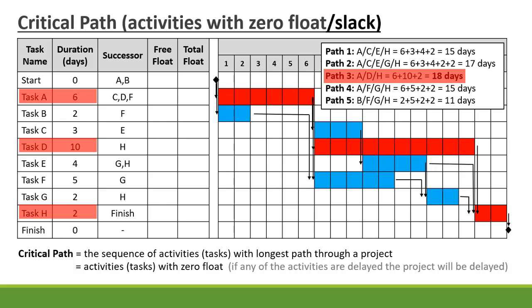So our critical path is A, D, and H. If A, D, or H is delayed, the project will be delayed.